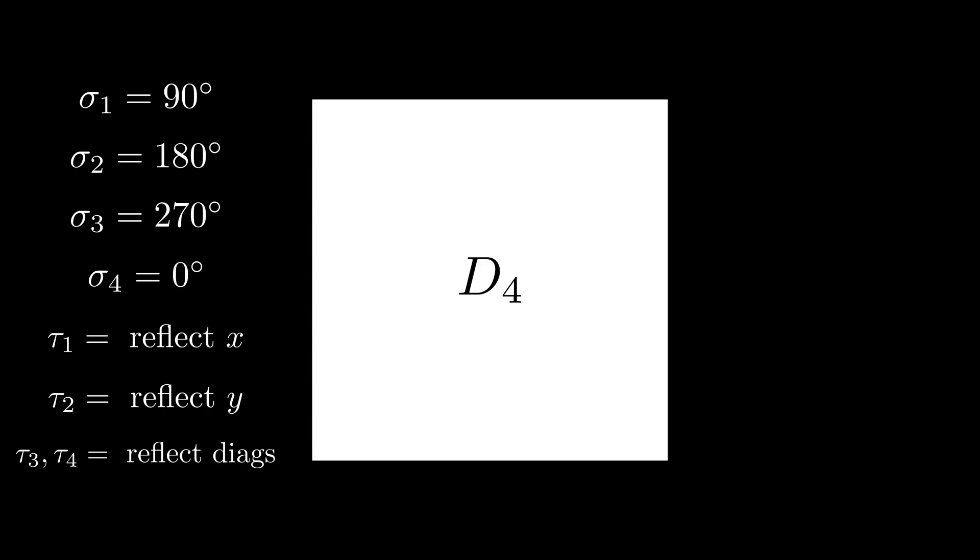Now before giving the abstract definition of a group, let's consider the symmetries of one more object. This time, we'll consider a coin. In this case, the angle of rotation does not matter. So there are an infinite number of rotations you can perform that all preserve the original structure of the coin.